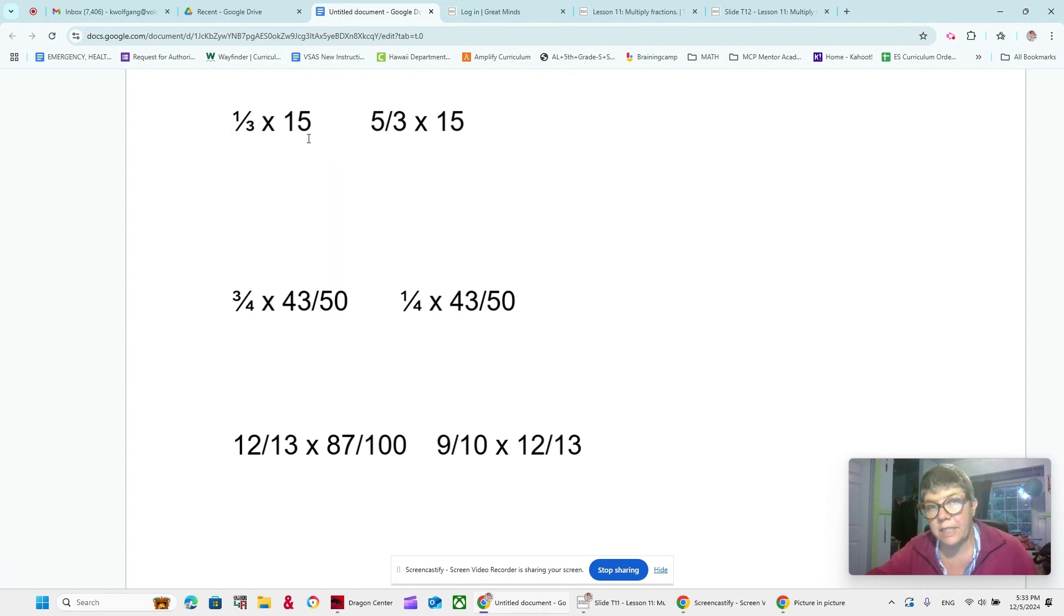One-third of 15 versus five-thirds of 15. Now, you know when they give you those problems and they say, don't evaluate, try to solve without evaluating, like you're just going to estimate, so think about that. One-third versus five-thirds. If we multiply by one-third, it's going to be less than 15. If we multiply by five-thirds, because that's more than one, then our answer is going to be more than one, so we automatically know without doing any math that the first one is less than the second one.